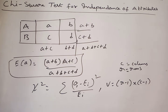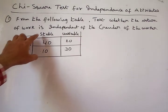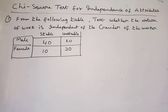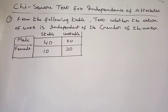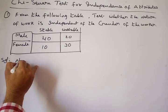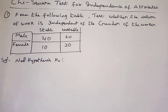Let us solve the first problem. From the following table, test whether the nature of work is independent of the gender of the worker. The data given is: Male — Stable: 40, Unstable: 20; Female — Stable: 10, Unstable: 30. These are the observed frequencies. First, we write the null hypothesis.